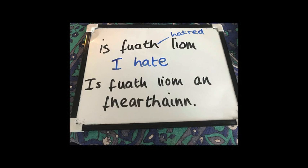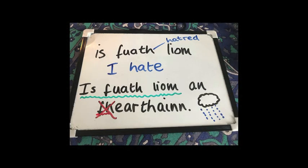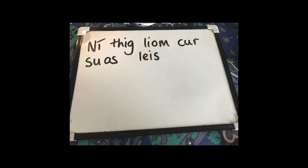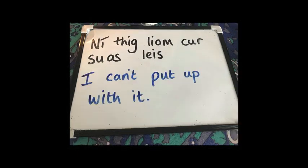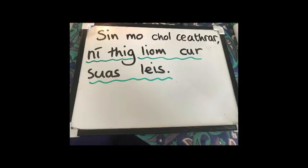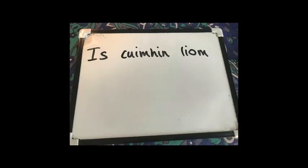And it links to this one: 'is fuath liom' — I hate. Fuath is the hatred, is fuath liom — and it's with me again, liom, the hatred is with me. Is fuath liom an náiríochán — I hate the rain. 'Ní féidir liom cur suas leis' — ní féidir liom cur suas leis — I can't put up with it, or with him — leis. Sin meascán ceart — ní féidir liom cur suas leis. You tell me what does that mean.